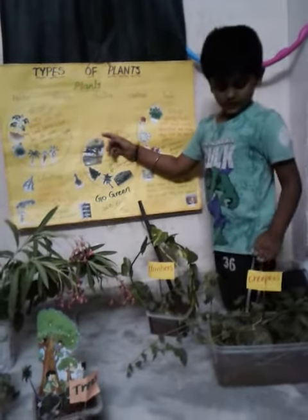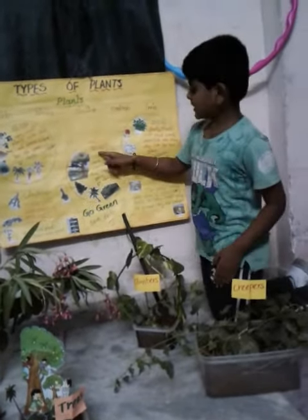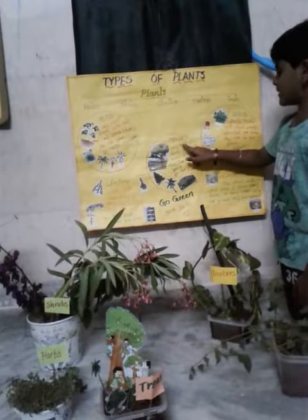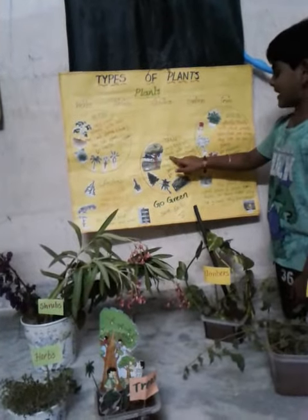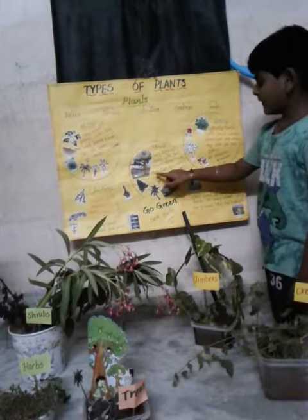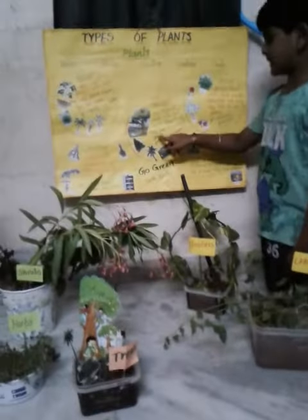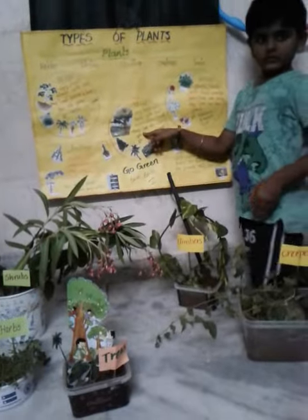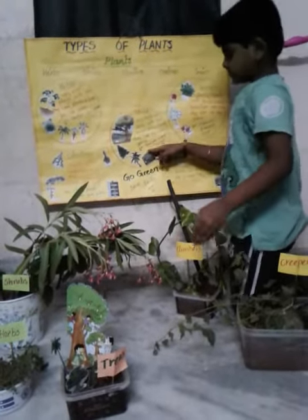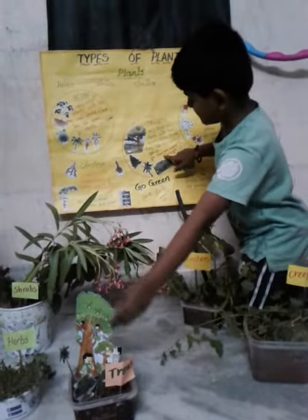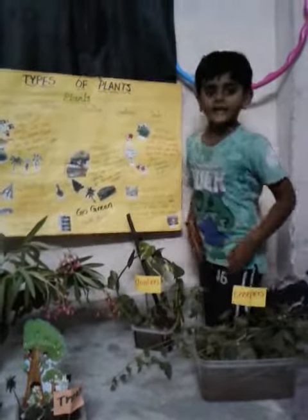These are trees. Very big and tall plants with hard brown stems. They live for many years. Examples: banyan, neem, mango. Thank you.